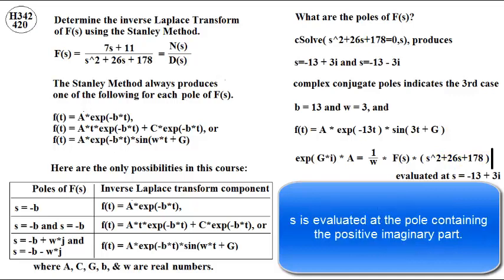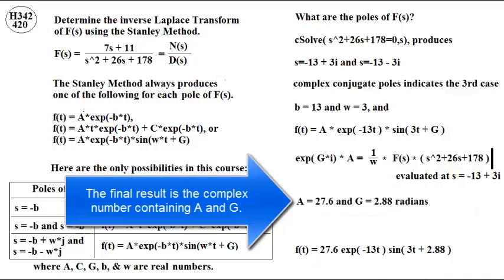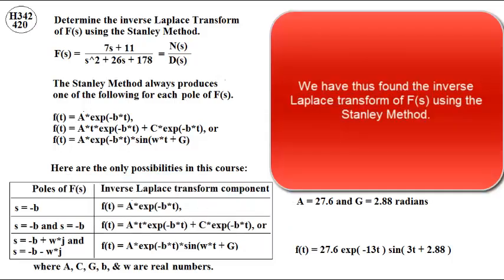S is evaluated at the pole containing the positive imaginary part. The final result is the complex number containing A and G. We have thus found the inverse Laplace transform of F of S using the Stanley method.